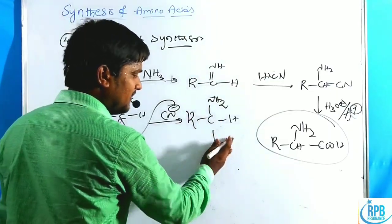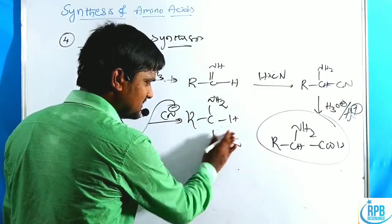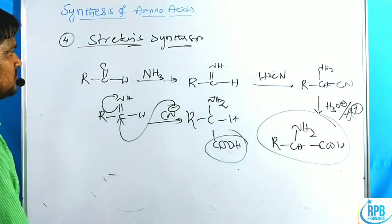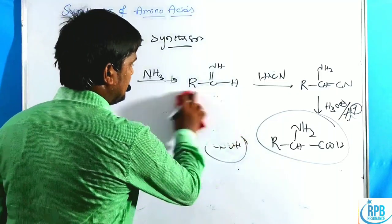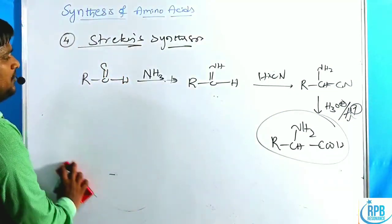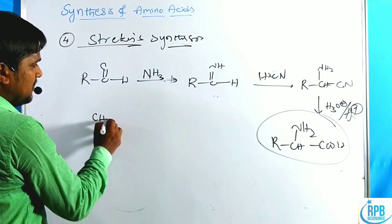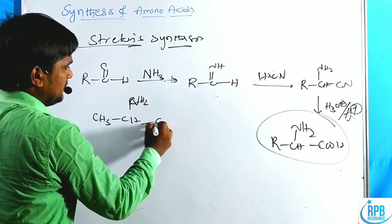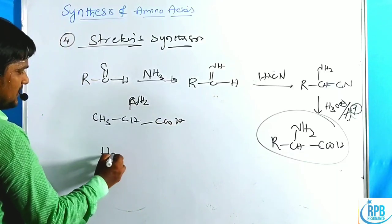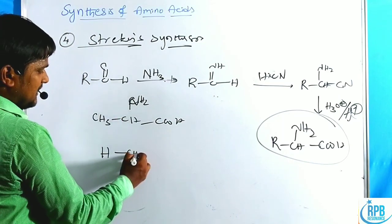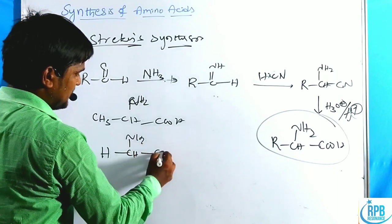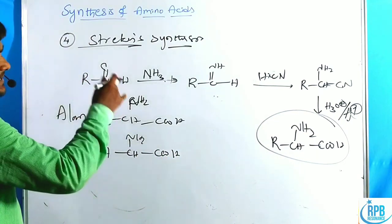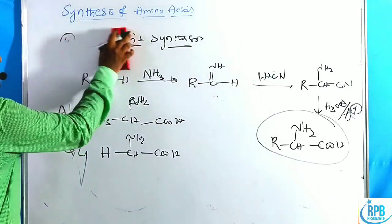The nitrile group undergoes acidic hydrolysis to give the carboxylic acid, completing the amino acid. If R = CH₃, we get alanine (CH₃–CH(NH₂)–COOH); if R = H (formaldehyde), we get glycine. These are simple examples of Strecker synthesis.